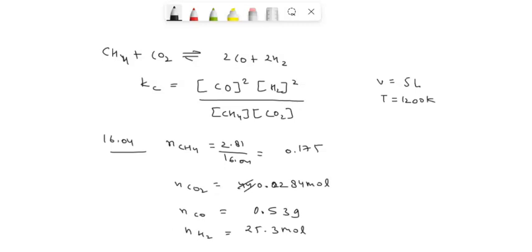Now from these we can substitute our values to find Kc. We get Kc equals n_CO squared multiplied by n_H2 squared, divided by n_CH4 multiplied by n_CO2.